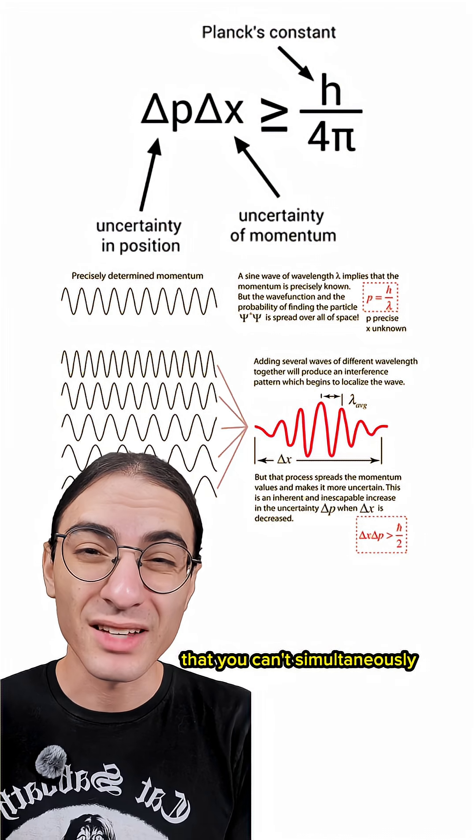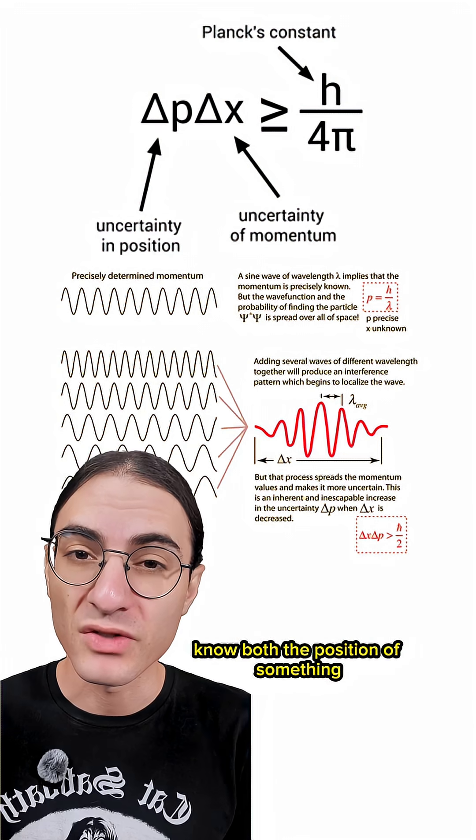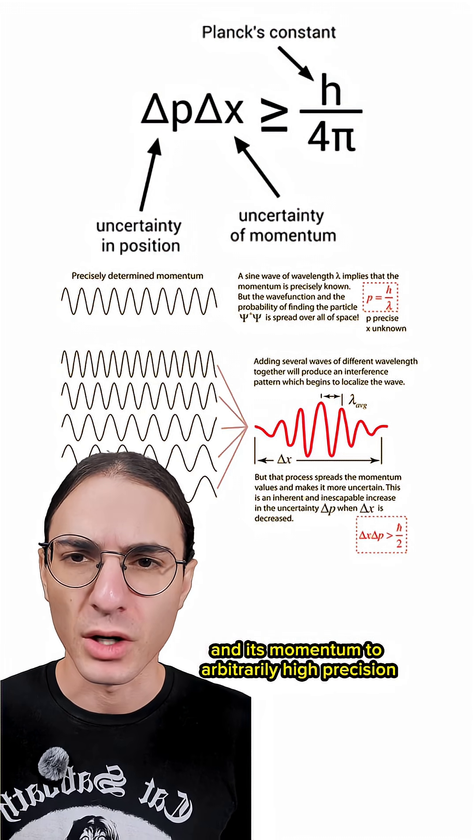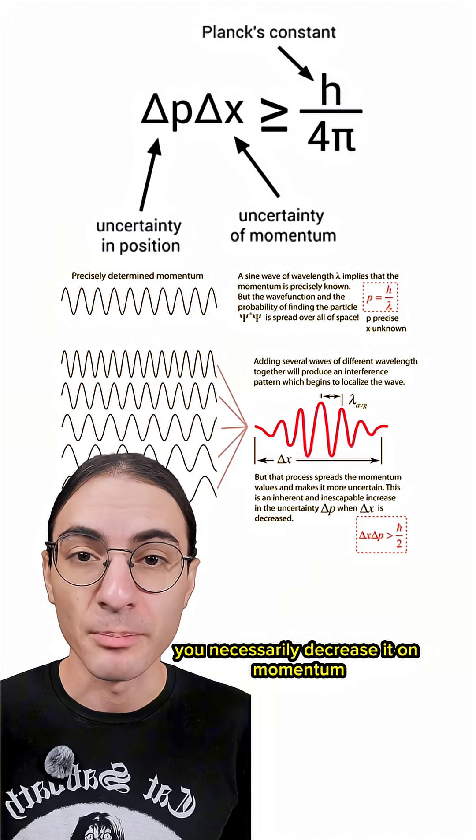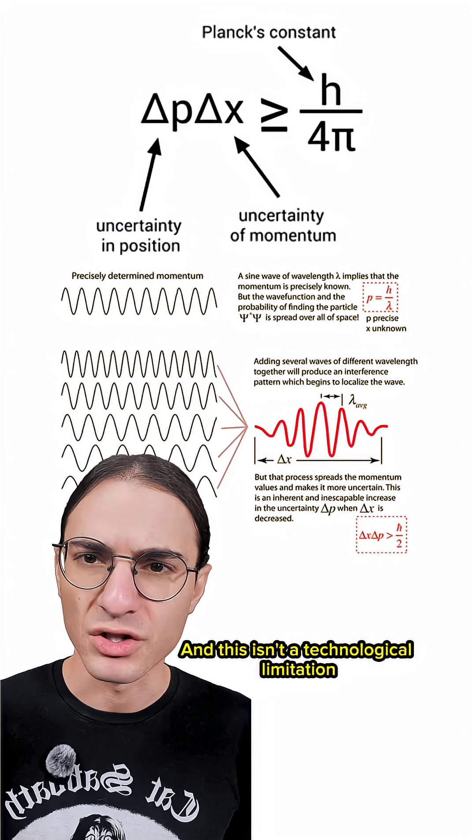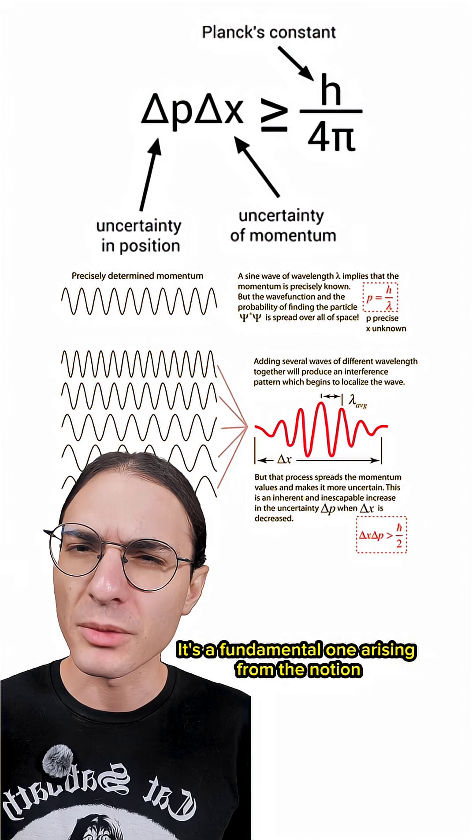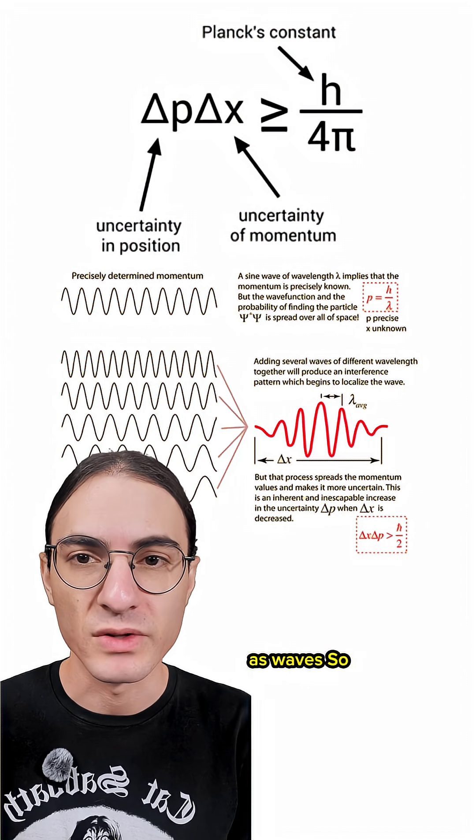It essentially dictates that you can't simultaneously know both the position of something and its momentum to arbitrarily high precision. If you increase the precision on position, you necessarily decrease it on momentum. And this isn't a technological limitation, it's a fundamental one arising from the notion that quantum mechanical systems are better described as waves.